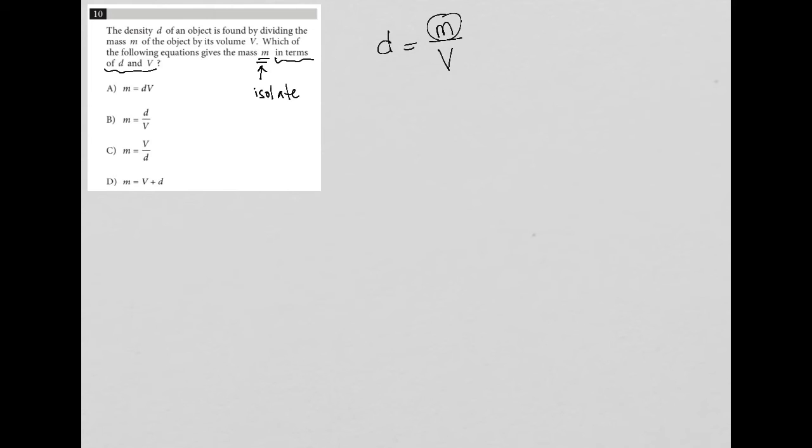So I want to isolate M. So what can I do to this equation to get M by itself? Well, all I need to do is multiply both sides by V.